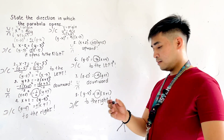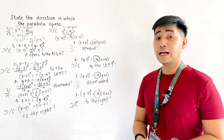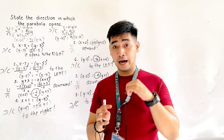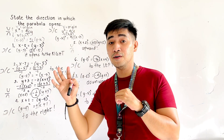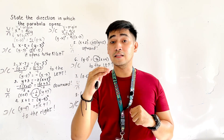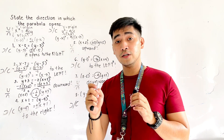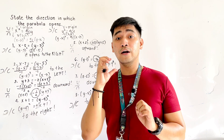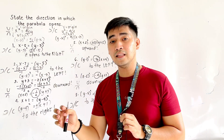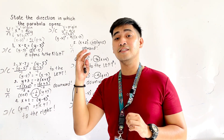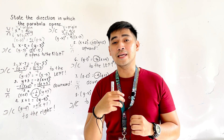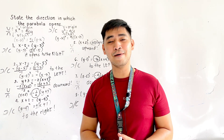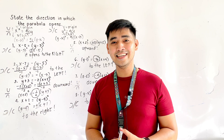That is how we state the direction of the opening of the parabola. If we have x minus h quantity squared, it will open up or down — positive means up, negative means down. If we have y minus k quantity squared, it opens to the left or to the right — positive means right, negative means left. I am Engineer Jod Edward Hernandez saying that mathematics is always fun. Goodbye and God bless.